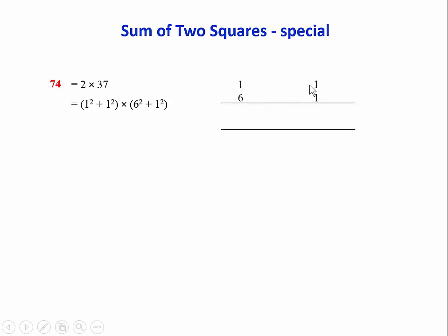We combine these together using vertically and crosswise. So here's the 1, 1, and here's the 6, 1. And we multiply vertically and subtract. So 1 times 6 minus 1 times 1, we get 5. Then we multiply crosswise and add. So we get 1 times 6 plus 1 times 1, which is 7. So 74 is 5 squared plus 7 squared.